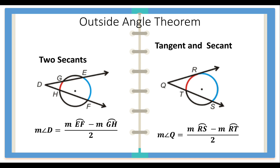We may also have two secants intersecting outside the circle, so this theorem may also be named the intersecting secants exterior theorem. The two secants are ray DE and ray DEF, with the point of intersection outside being point D, forming angle D. The two intercepted arcs are the blue arc EF and the red arc GH. So the measure of angle D is equal to the difference of the measure of arc EF minus the measure of arc GH, divided by two.